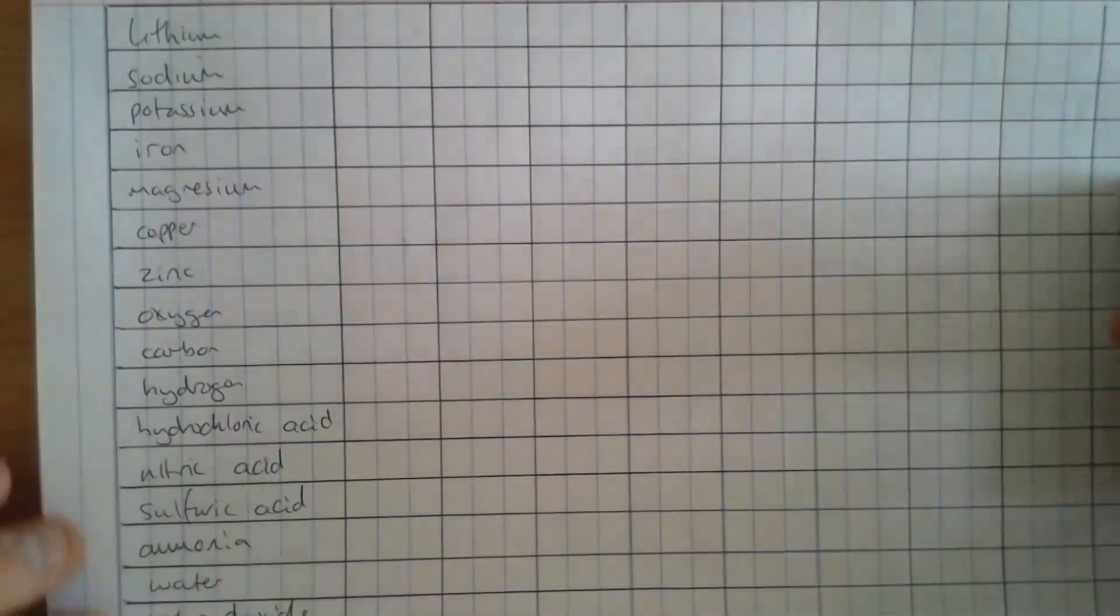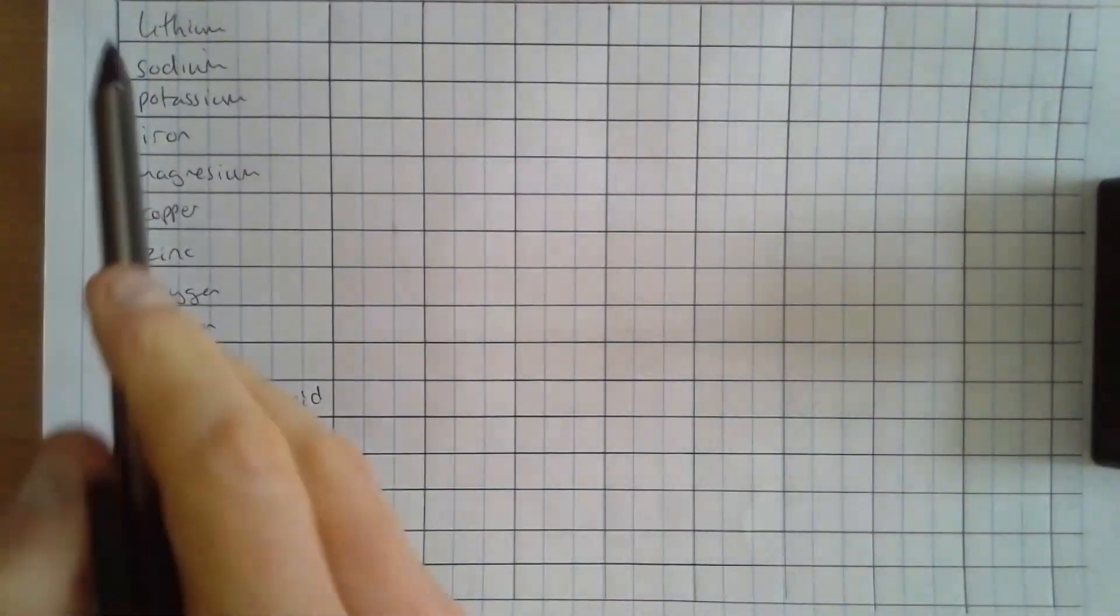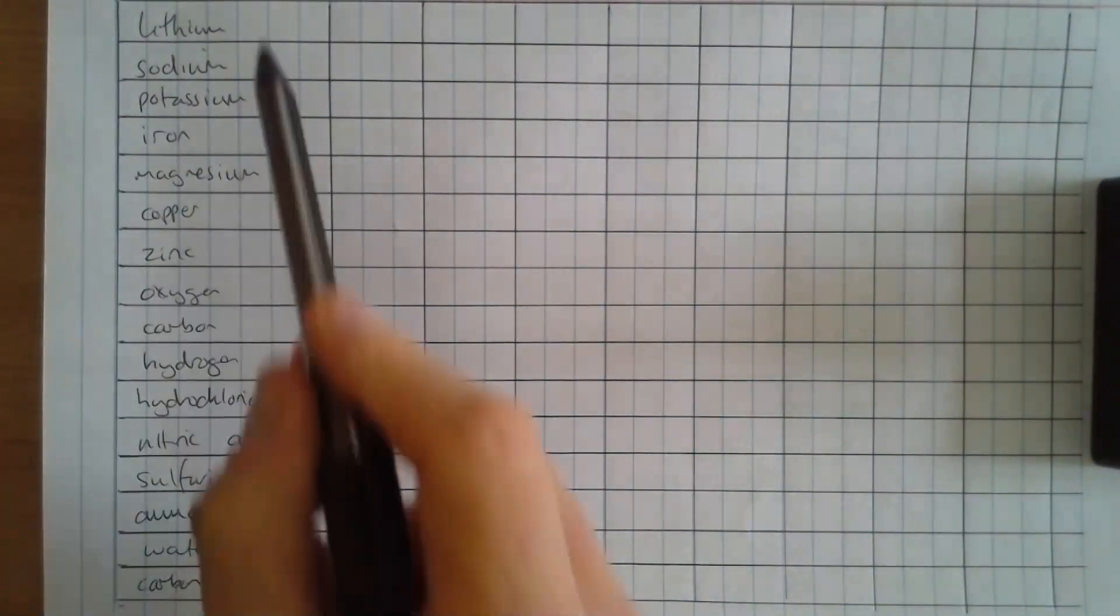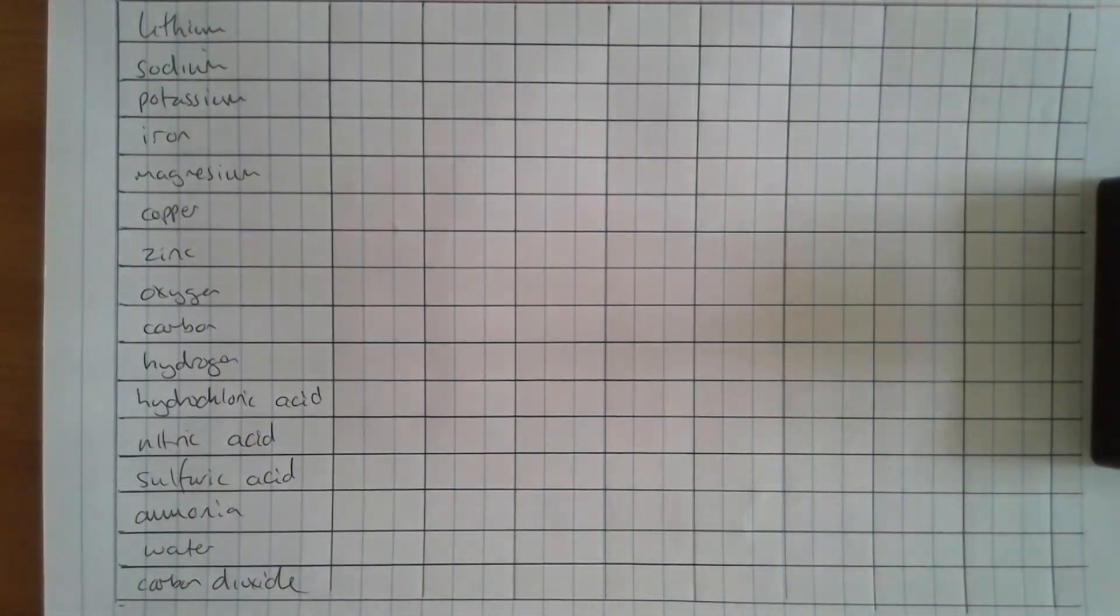A little bit earlier before this lesson, I drew this on a piece of paper. So what I've done here is put 16 rows on this piece of paper and written in the names of all of the symbols and compounds, formulae that we need to know. And then I've drawn, I think, eight columns here. So this is eight revision sessions worth.